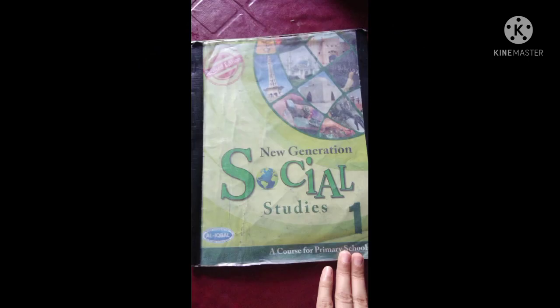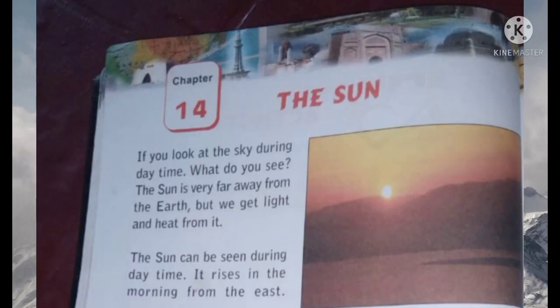Open page number 36, chapter number 14. The topic is the sun. So let's start. The sun is very far away from the earth. Here is the word 'far away' and its meaning is 'bohat dur'.